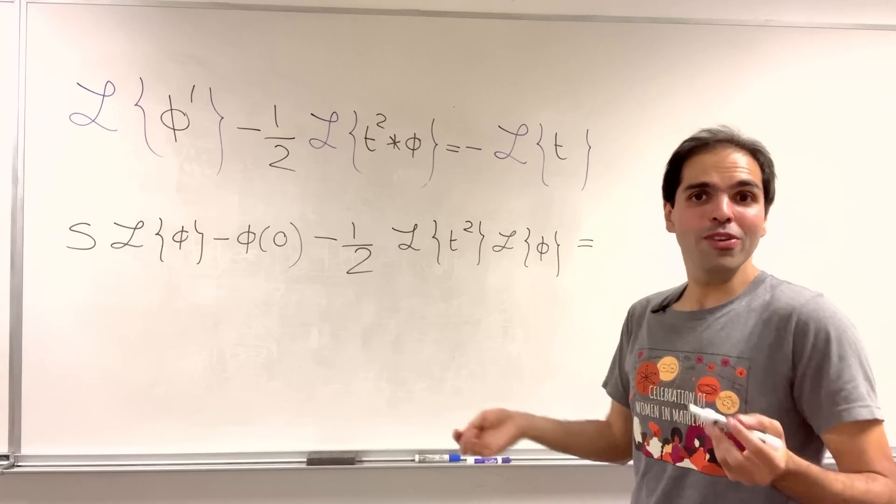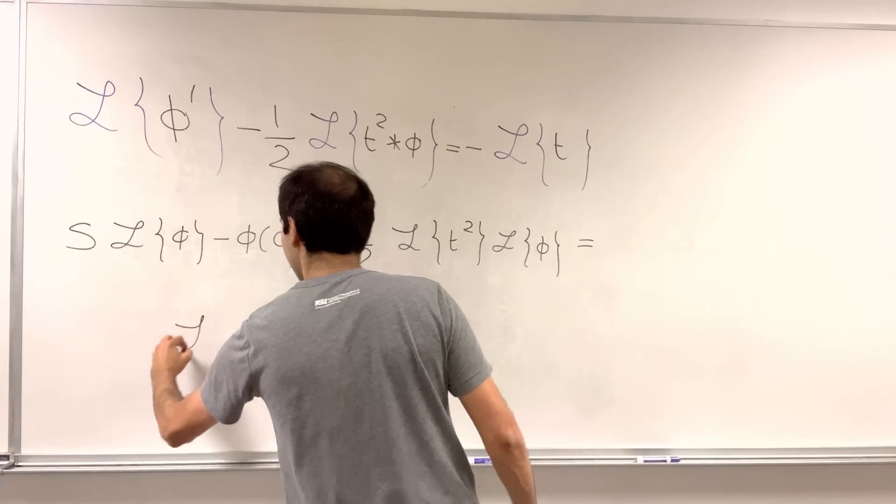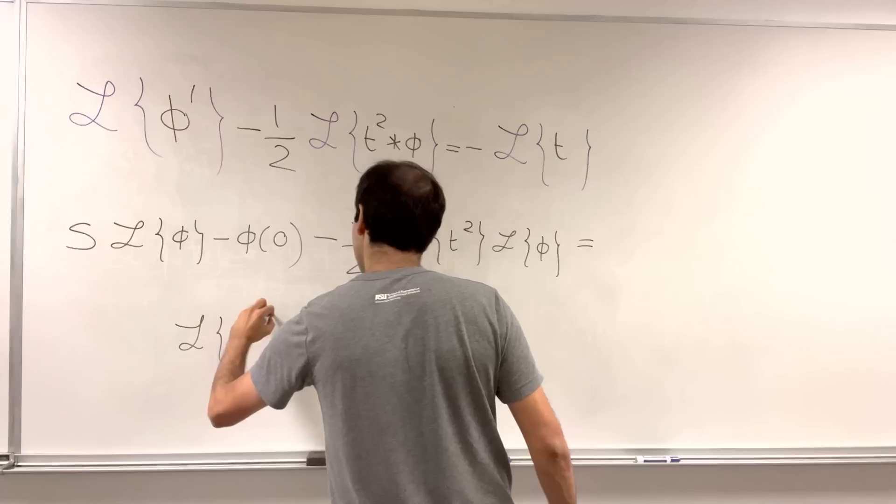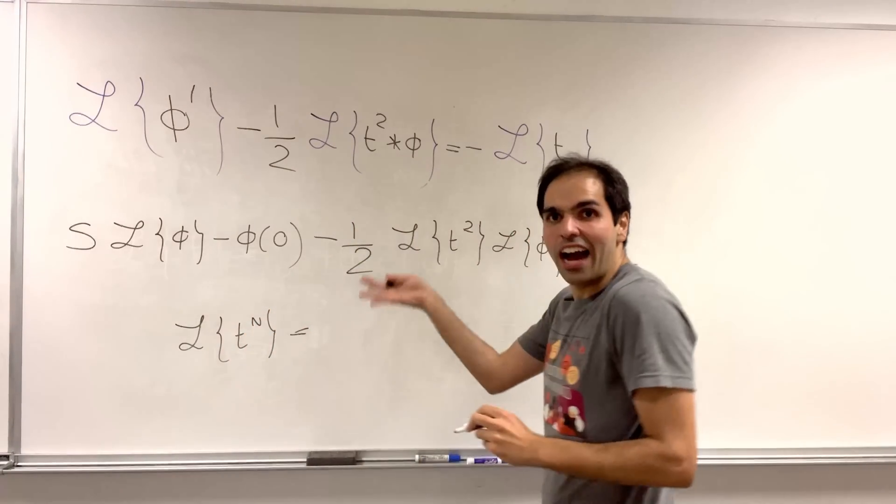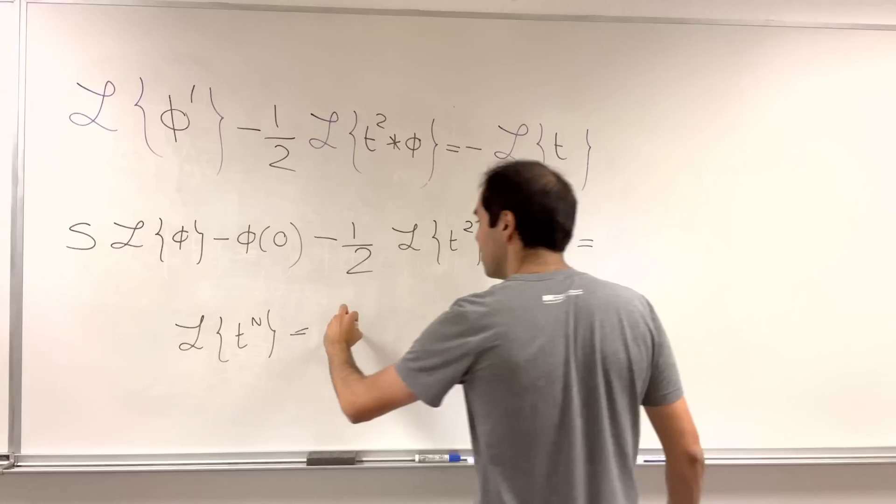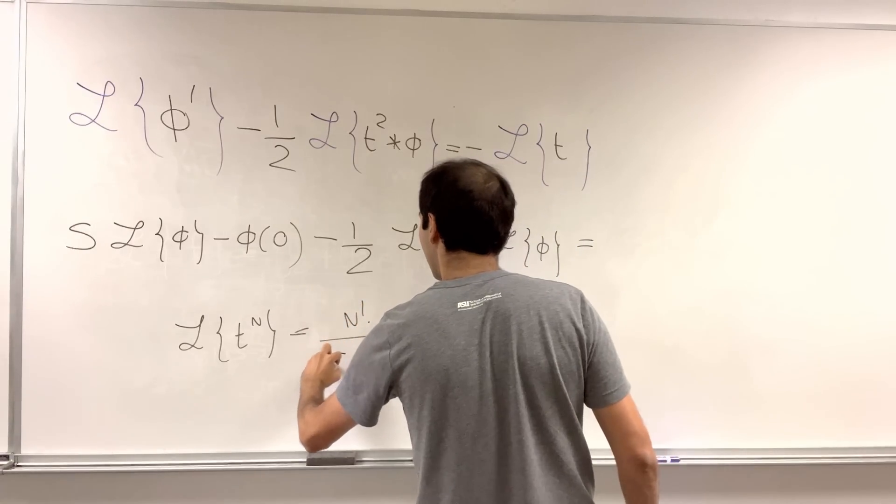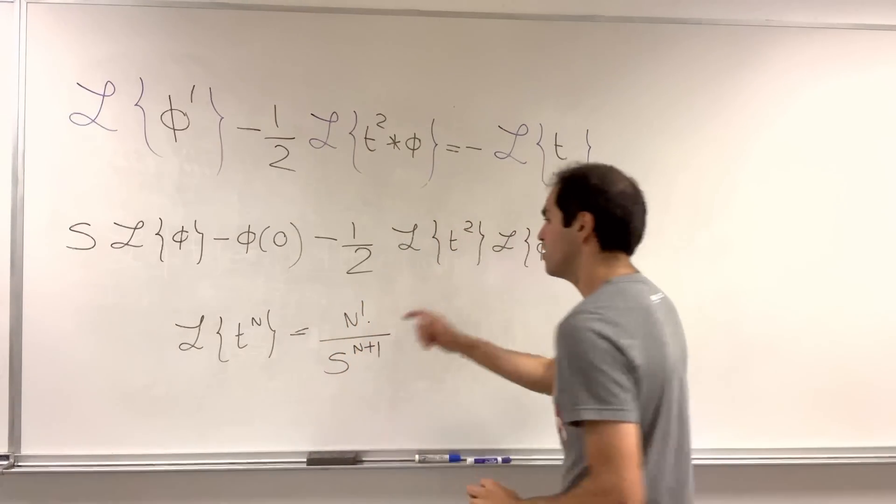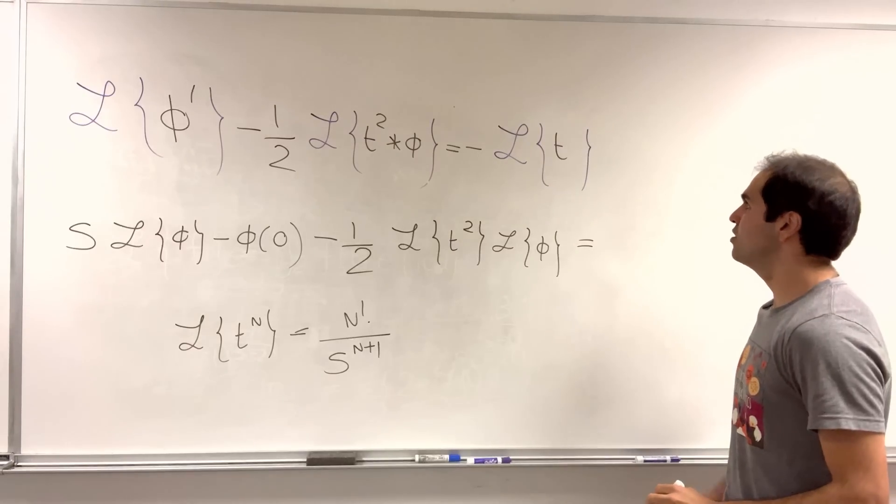So, now we do need some formulas. In general, the Laplace transform of t to the n, kind of like an integration rule, it's n factorial over s to the n plus one, so you're adding one to the exponent.